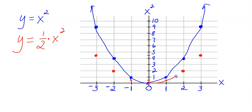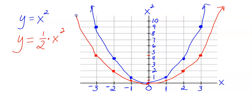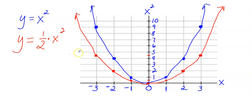The new graph in red appears to be wider. To describe this transformation, you would say the parent function in blue was vertically compressed by a factor of 1 half, making it appear wider. To vertically shrink a graph, multiply the x squared value by some number less than 1 but greater than 0.